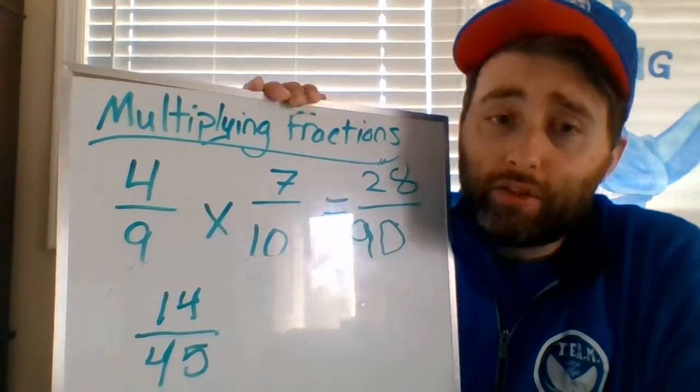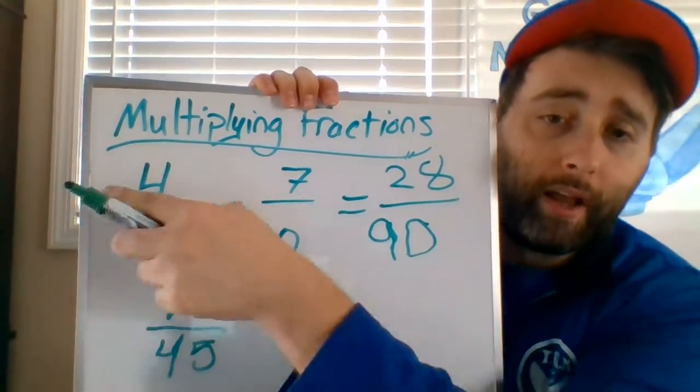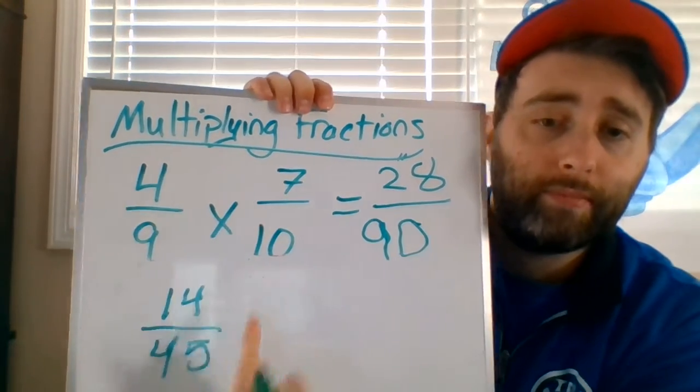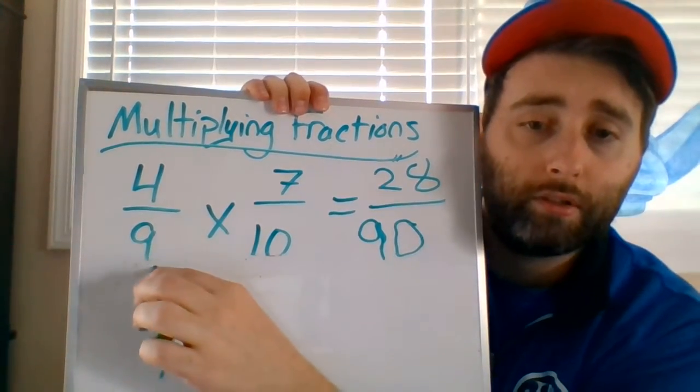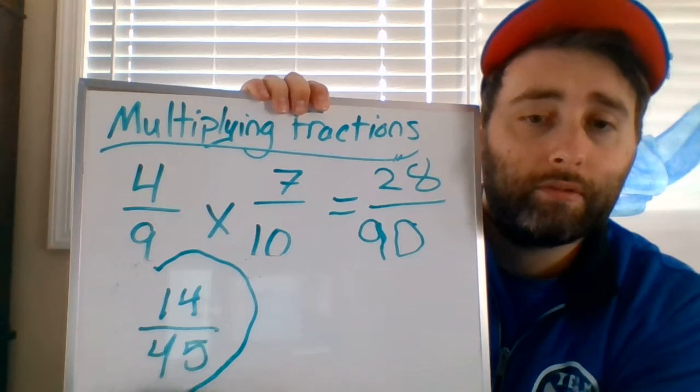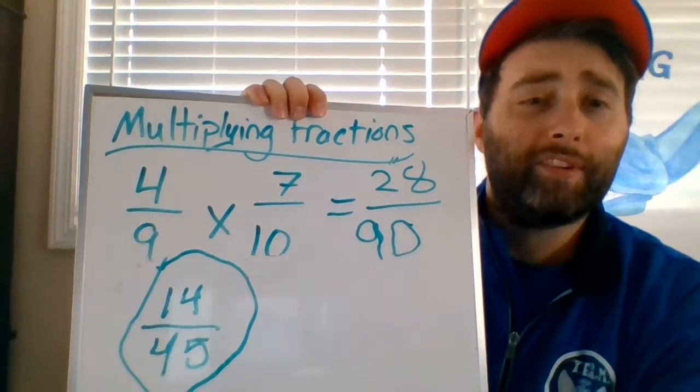So when you're multiplying fractions, all you have to do, multiply across, reduce your answer, which let's see how terrible this circle becomes. Oh, terrible circle. Very good.